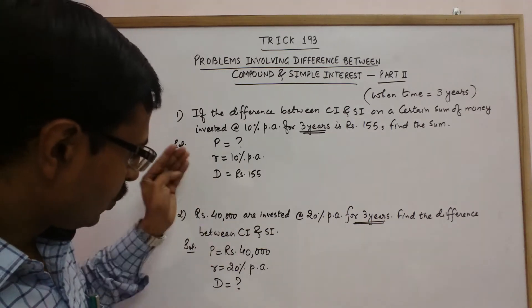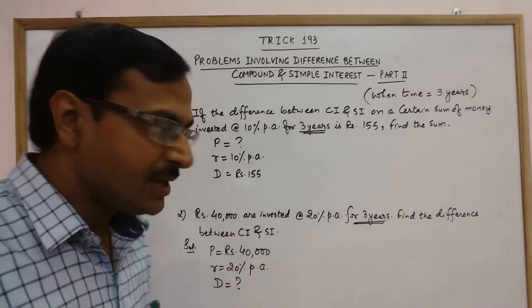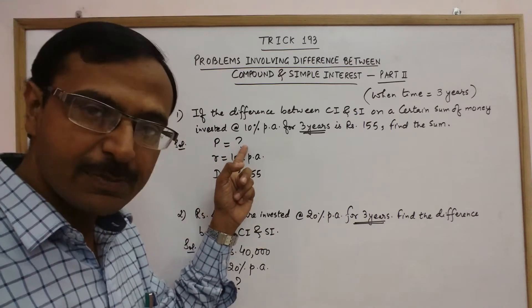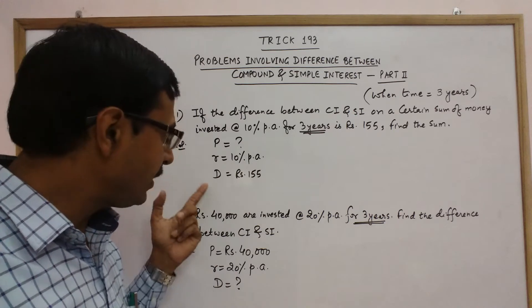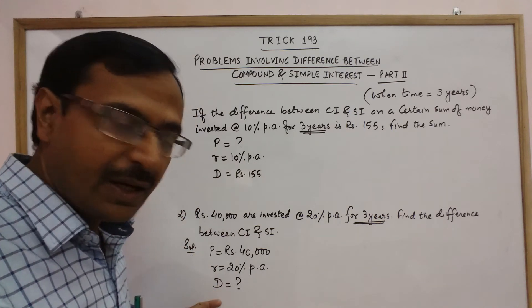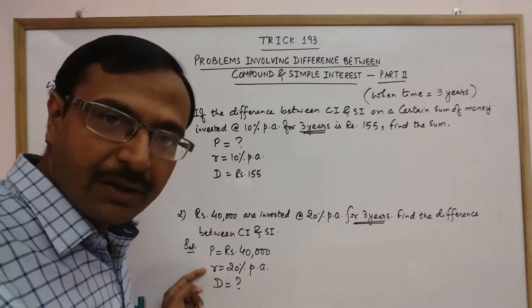So you see two problems, they are similar in nature. Only thing is the variable which is to be found out is different. Here we need to find out the principal amount P given R and D, and here we need to find out the difference D given principal and the rate of interest.